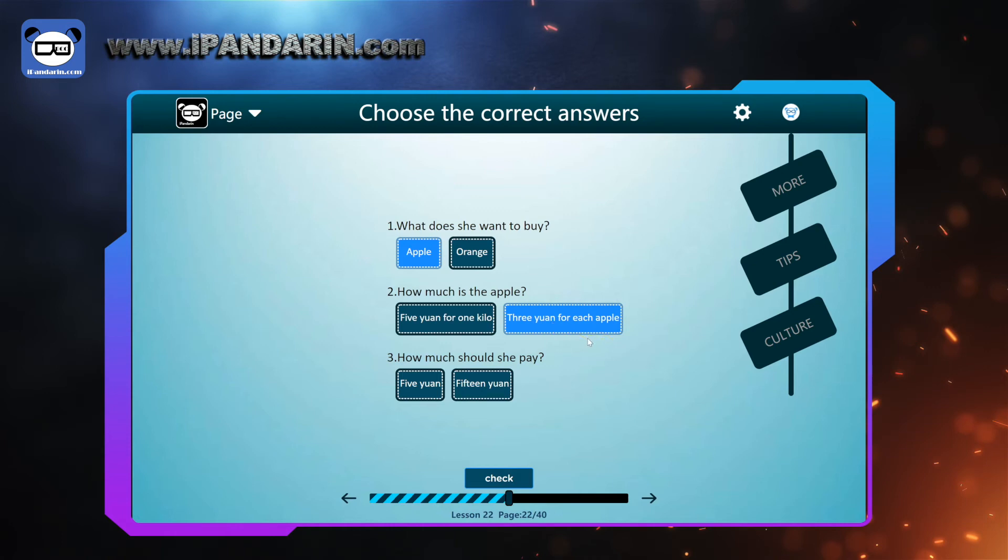How much is the apple? Three yuan for each apple. 一个苹果三块钱. How much should she pay? She wanted to buy five apples. So three times five. Fifteen yuan. Five apples cost fifteen yuan.